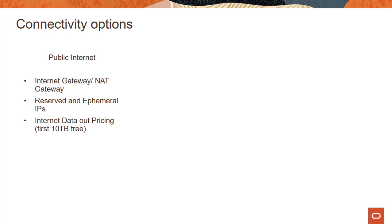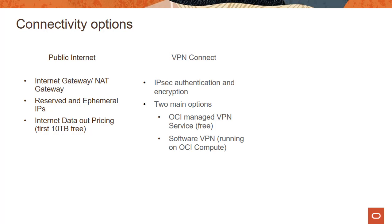So until now, we have talked about virtual cloud network and we have looked primarily at creating an internet gateway and a NAT gateway. If you recall from my previous module on virtual cloud network, we had a couple of demos — one on internet gateway and the other on a NAT gateway. And we looked at things like reserved public IP, ephemeral public IP, etc.